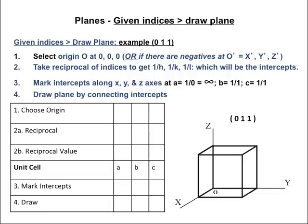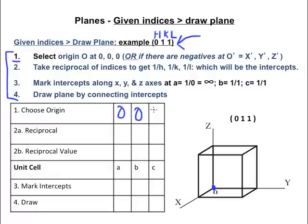Now we need to be able to draw the plane given the indices. Now we know how to give the indices having a drawn plane, we need to go in reverse. There is a similar four-step method to do this, and we are going to use this indice right here as our example. Remember, we have H, K, L for our Miller indice notation. Our step 1 is we select the origin O at 0, 0, 0, or if there's negatives at O' with X' and Y' and Z'. However, I'm talking about our example. There are no negatives, so our origin is here at 0, 0, 0.